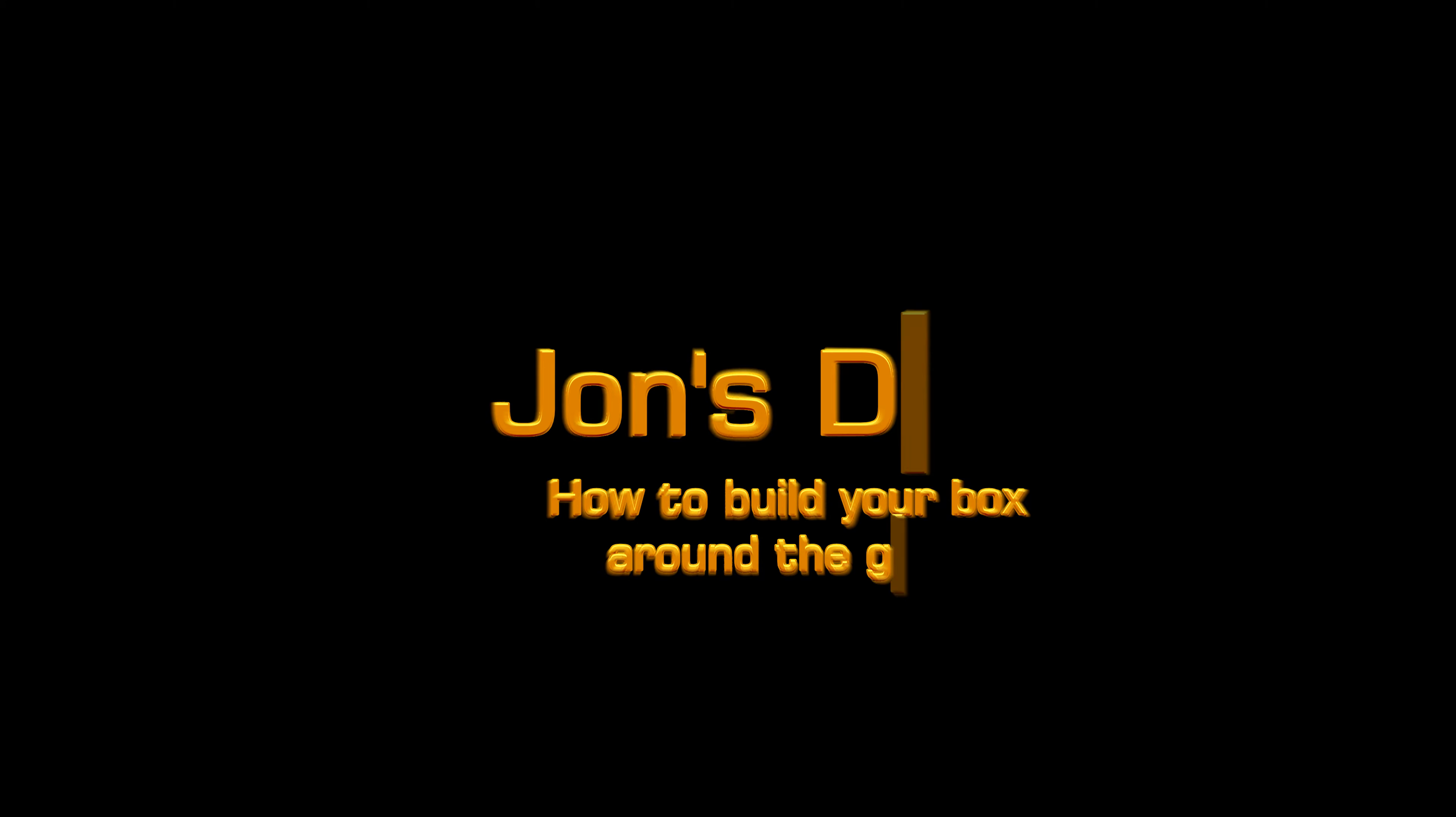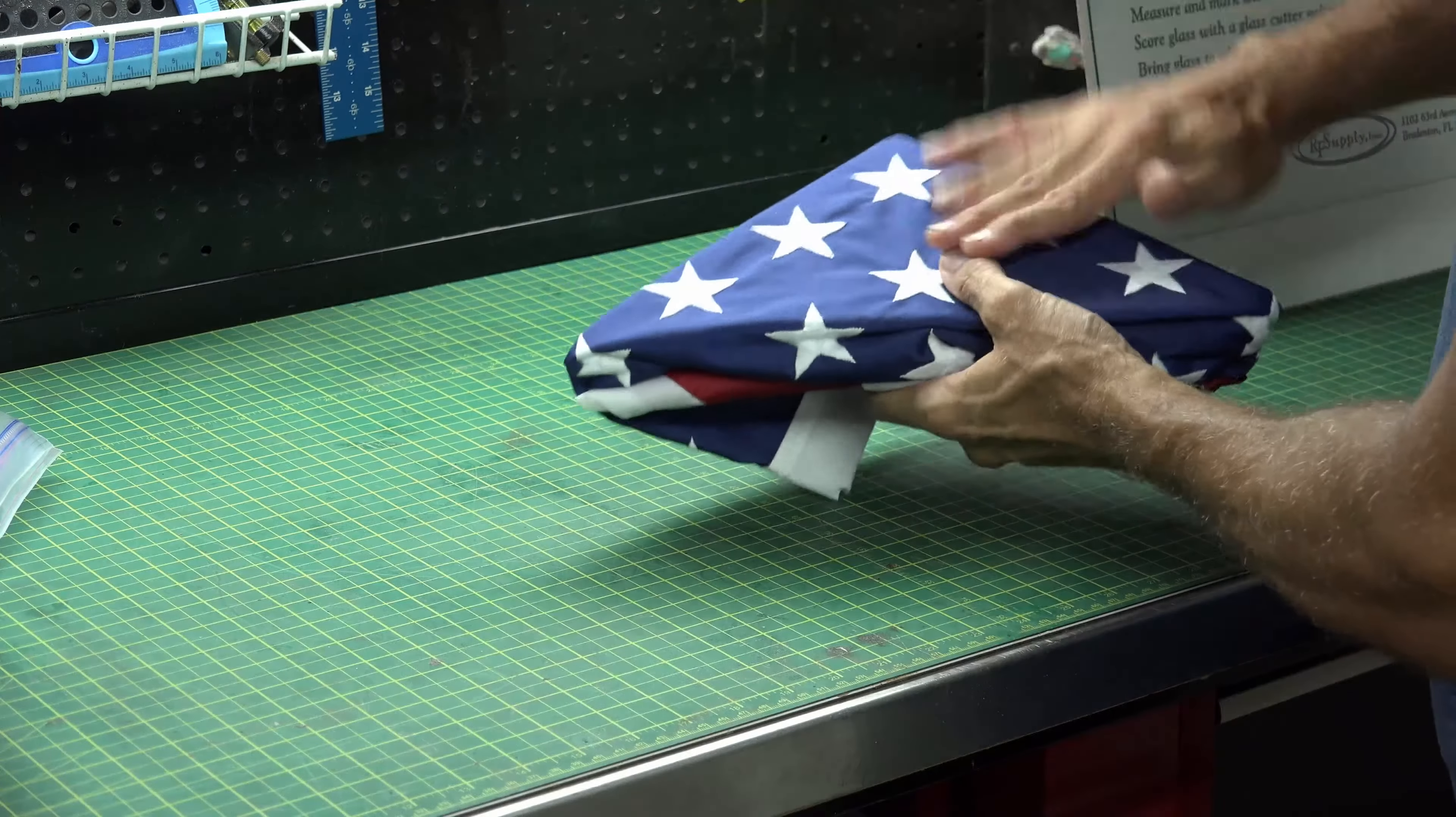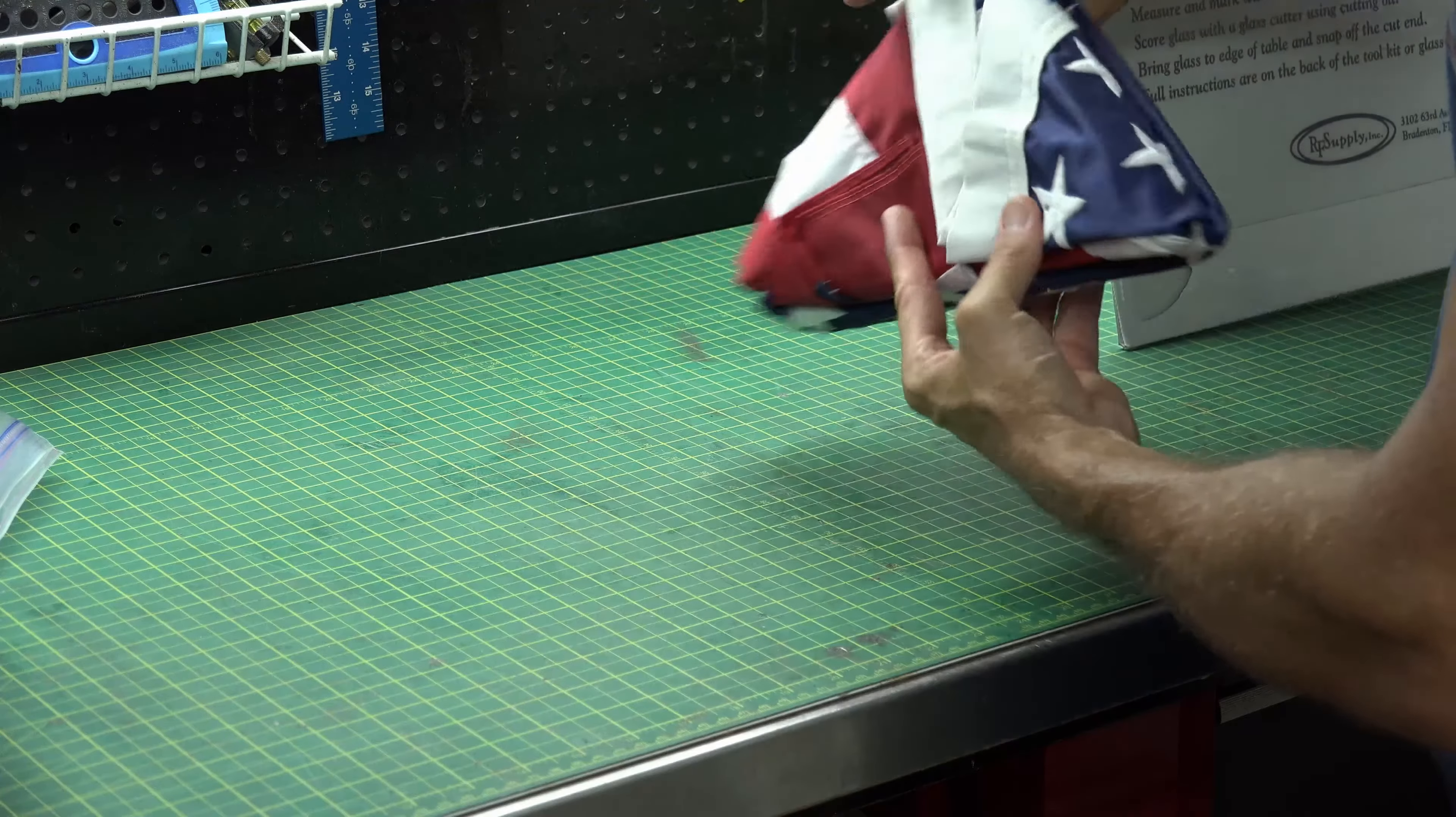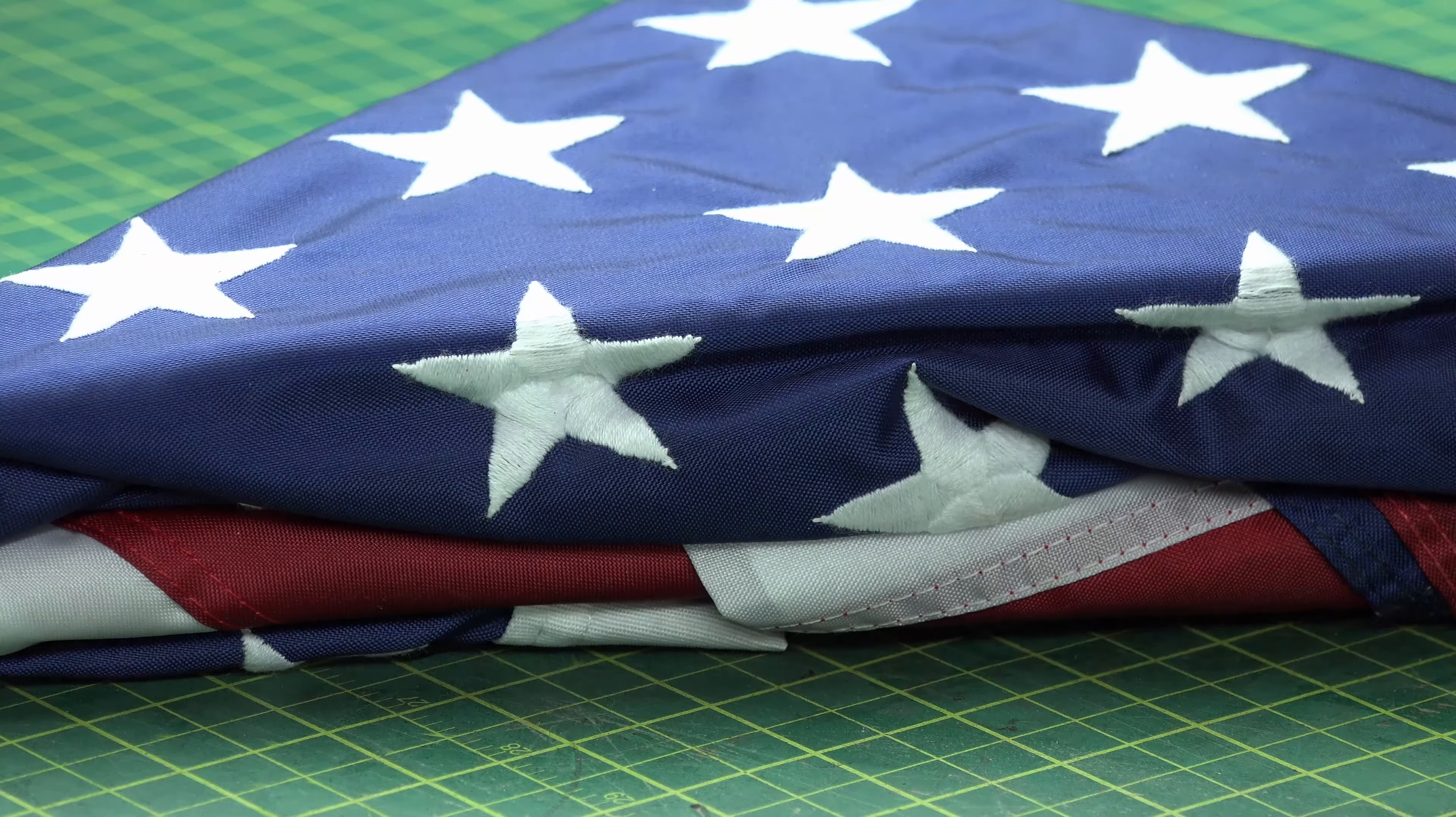Okay, so Carrie brought me her flag and I was really surprised to see that it was already mounted for a shadow box, meaning that it had the hard plane behind it and it was folded like it was ready to go into a shadow box so all the stars could be seen.